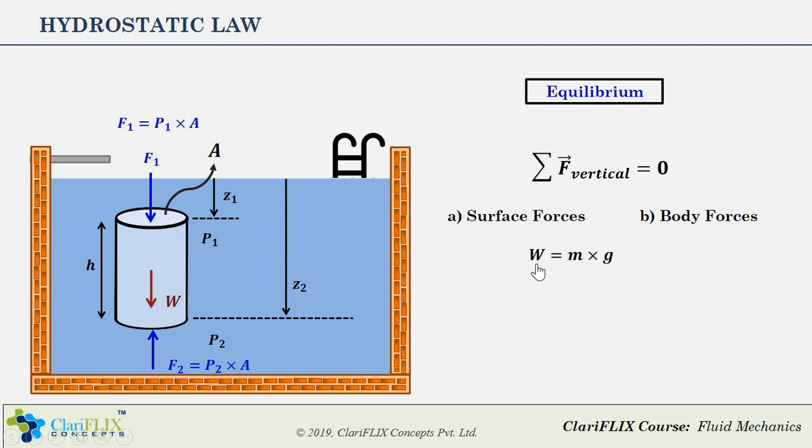Weight W of the element always acts in the downward direction, and we know that W equals mass of the element times g, the gravitational acceleration. Mass of this element can also be calculated as the product of density of the fluid times the volume of the element. So W equals ρVg. This is because density is the ratio of mass by volume, and therefore mass equals density times volume. Further, if we expand volume V as the product of area A times the height h of the cylindrical element, W finally becomes ρAhg.